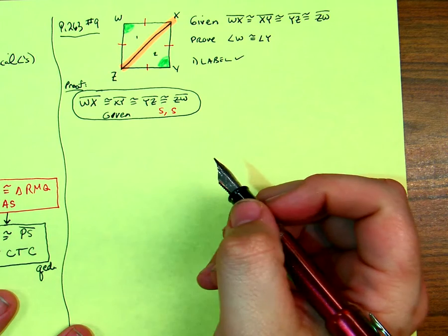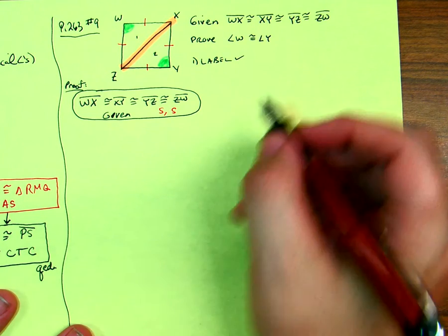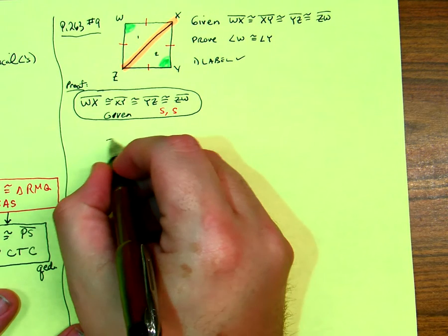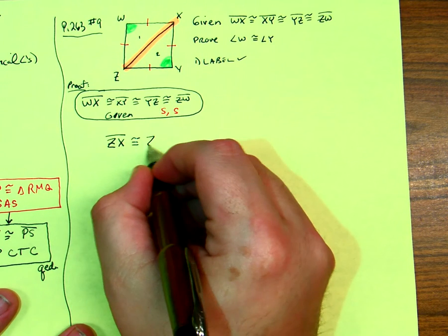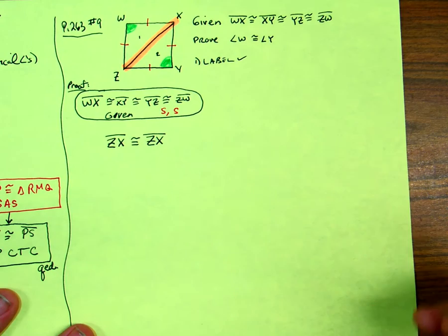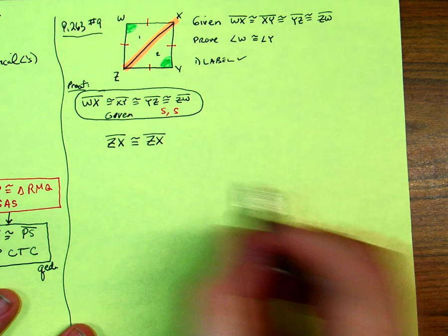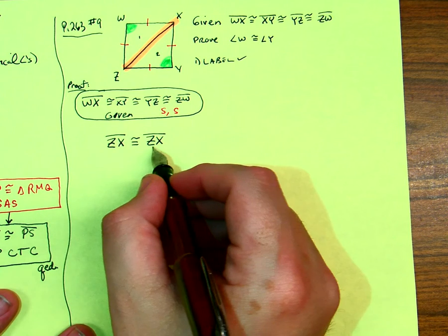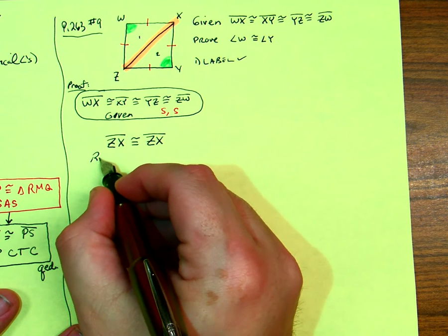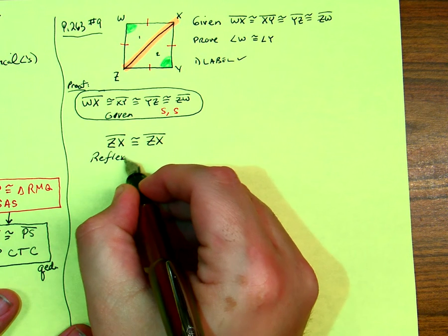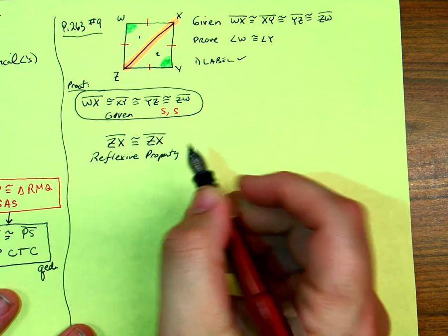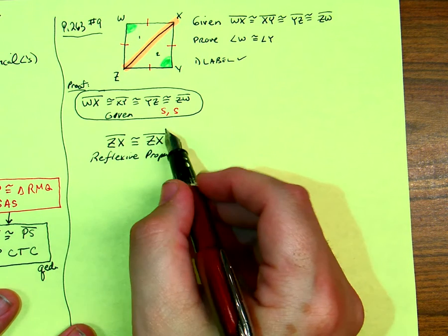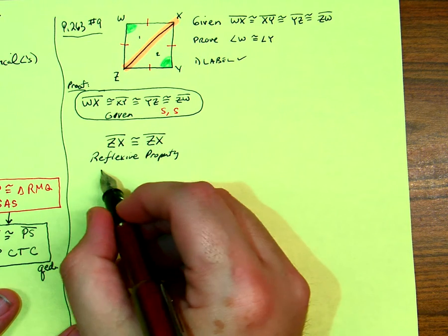So what can I say about that? ZX is congruent to itself. And what's the property we use? Reflexive. I'll just put under here, shared side.